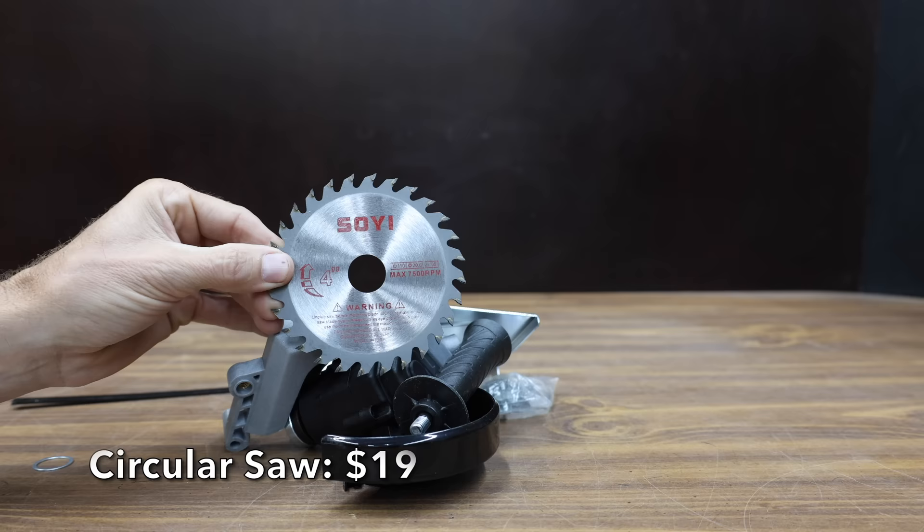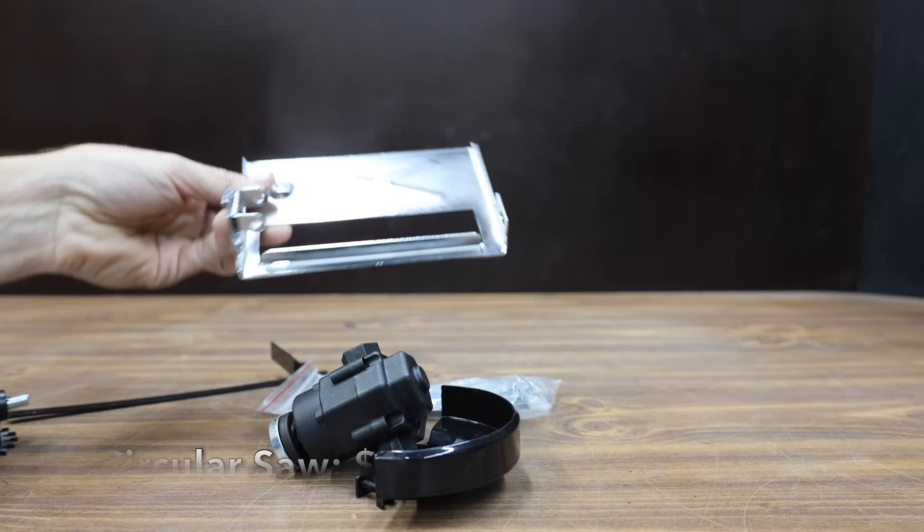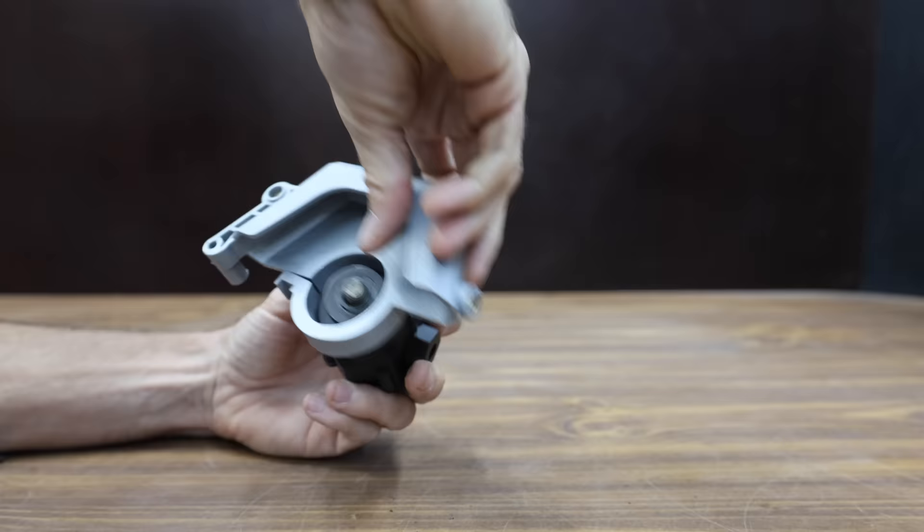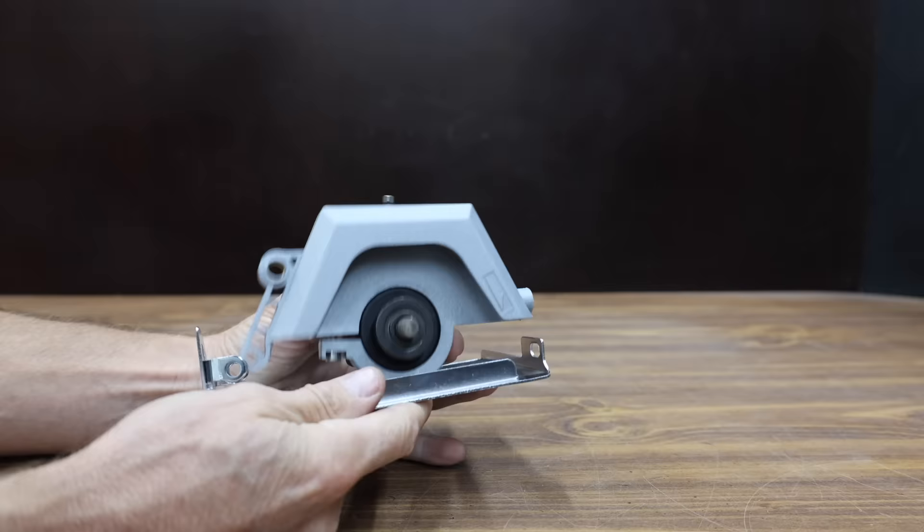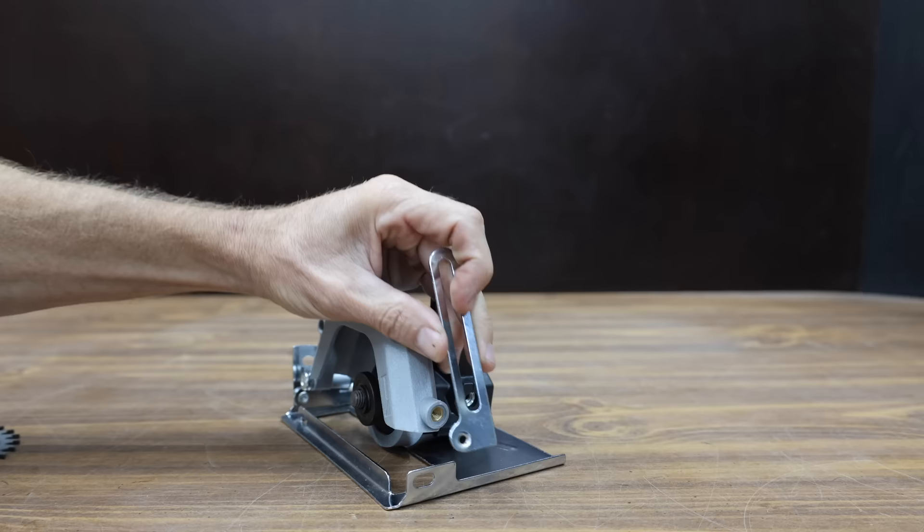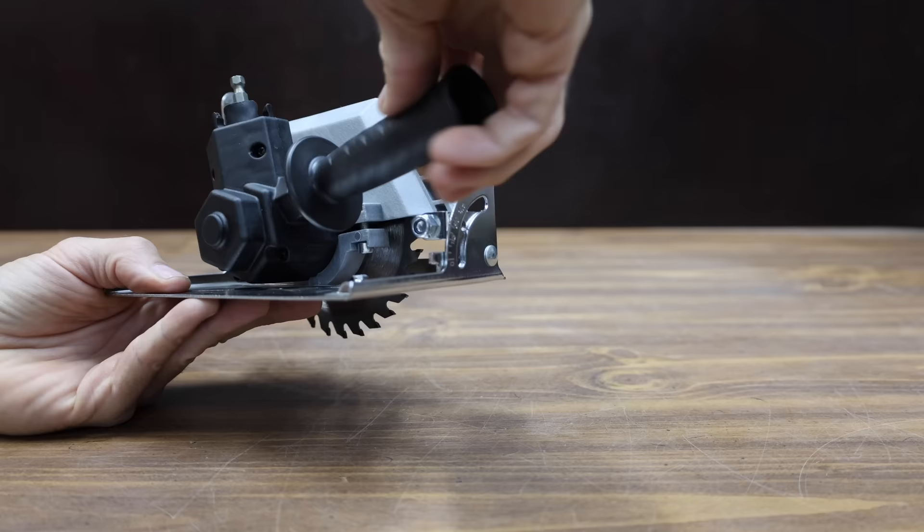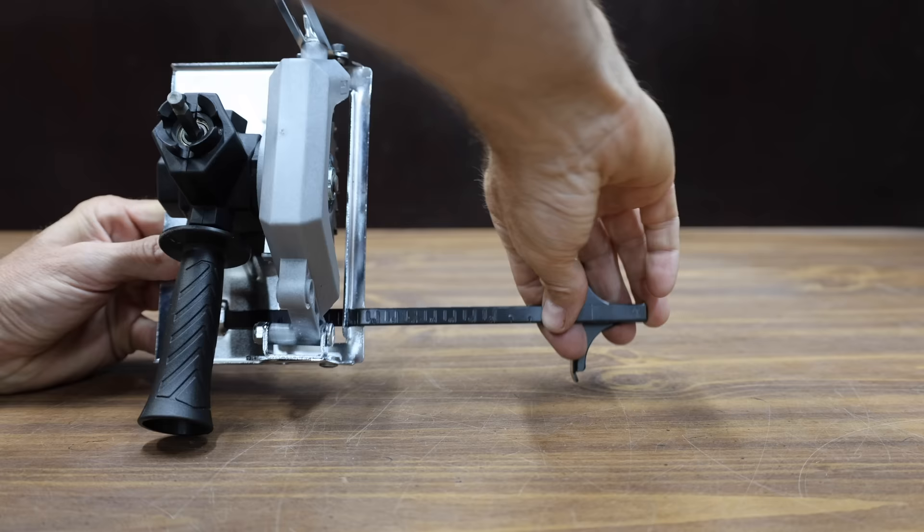For only $19, you can turn your drill into a circular saw. The circular saw can also double as an angle grinder. Unfortunately, the saw did not come with assembly instructions, but it is pretty simple to put together. A few nuts, bolts and about five minutes of assembly and the circular saw is ready for action. The build construction seems very light duty, but then again, the cost is under $20. You can even cut at an angle. Maximum cutting depth is about an inch. Made in China.